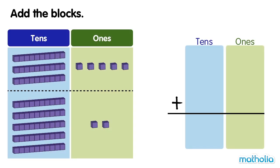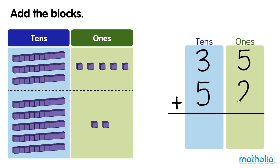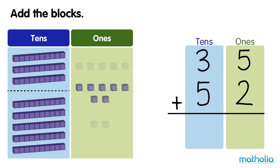Add the blocks. There are 35 blocks and 52 blocks. First, let's add the ones. Five ones plus two ones equals seven ones.